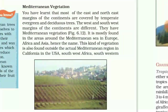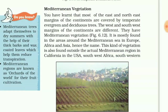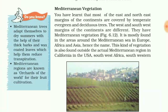Next is Mediterranean vegetation. The east and northeast margins of continents are covered by temperate evergreen and deciduous trees, while the west and southwest margins have Mediterranean vegetation.